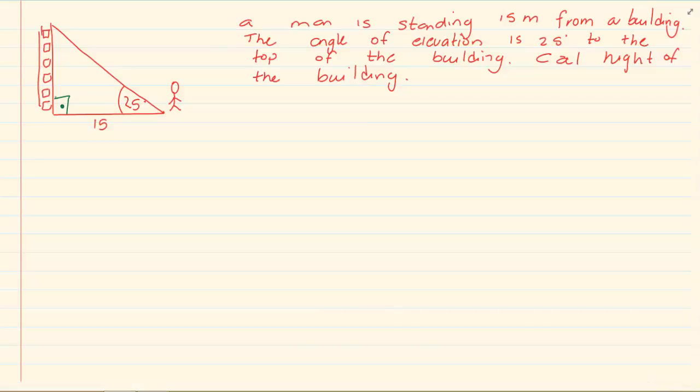Then they tell you the angle of elevation is 25 degrees. Most of the time the 25 degrees would be marked for you. So we know that there is an angle of 25 degrees from where the man is standing till the top of the building.